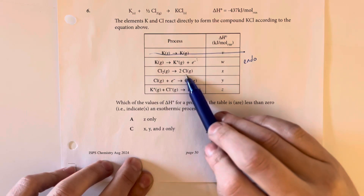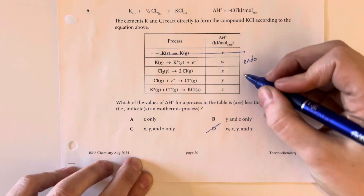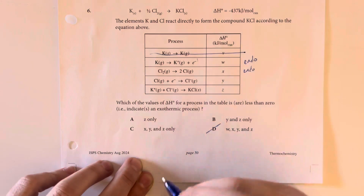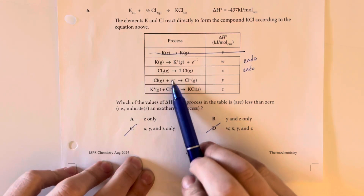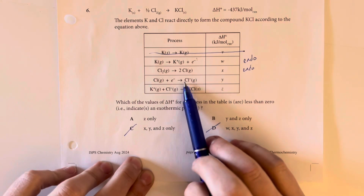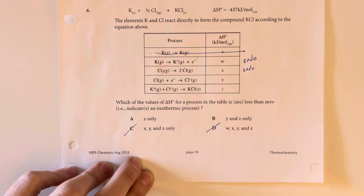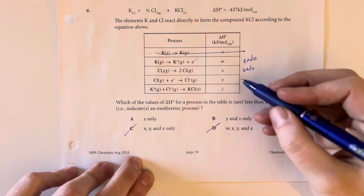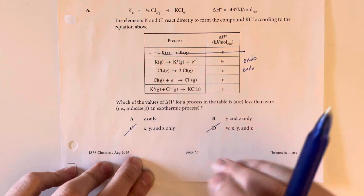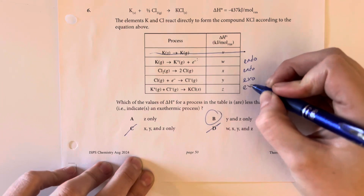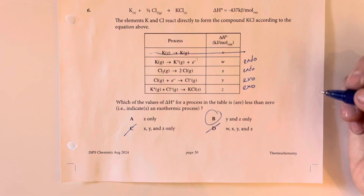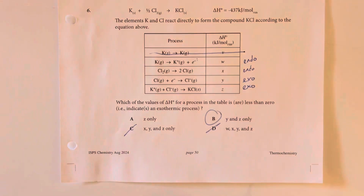For X — breaking the diatomic Cl₂ bond and forcing chlorine to be by itself when it really wants to be paired — that also requires energy input into the system, so it is also endothermic. Anything indicating X is also eliminated. For Y — chlorine capturing an electron and reaching an electron configuration closely matching a noble gas — that is a desired state for chlorine, so it is exothermic. For Z — the cation and anion coming together to form the ionic compound — that is also a desirable state, also exothermic, releasing energy. Both Y and Z are exothermic, leaving us with answer choice B.